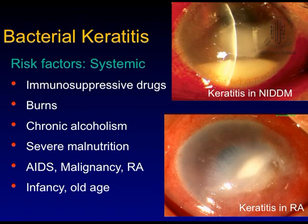The risk factors could also be systemic. These are two cases in diabetes and in rheumatoid arthritis where it tends to present in the form of a PUK (peripheral ulcerative keratitis).